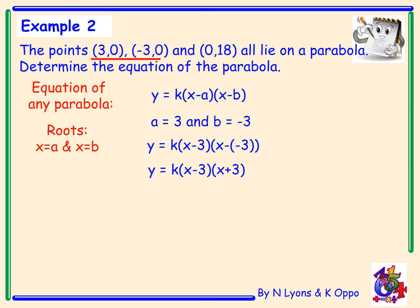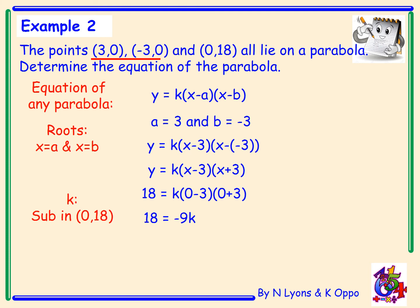Now I need to find the constant k. The y-intercept is (0, 18), meaning x equals 0 and y equals 18. Substituting into the equation: 18 equals k times (0 minus 3) times (0 plus 3). Doing the maths gives 18 equals minus 9k. Rearranging, k equals negative 2. Substituting back gives y equals minus 2 times x minus 3 times x plus 3. Multiplying out and rearranging gives y equals minus 2x squared plus 18.